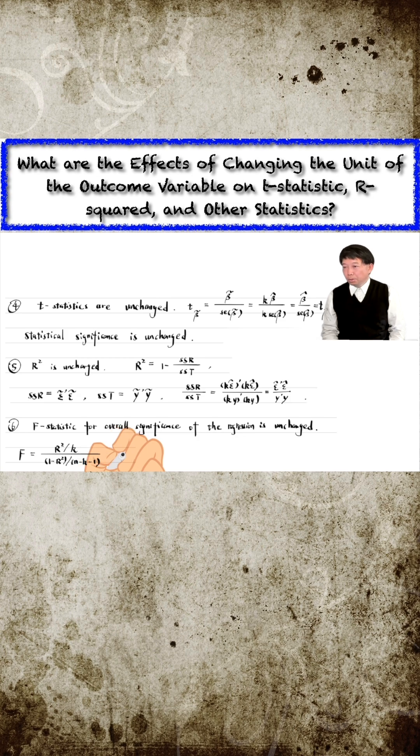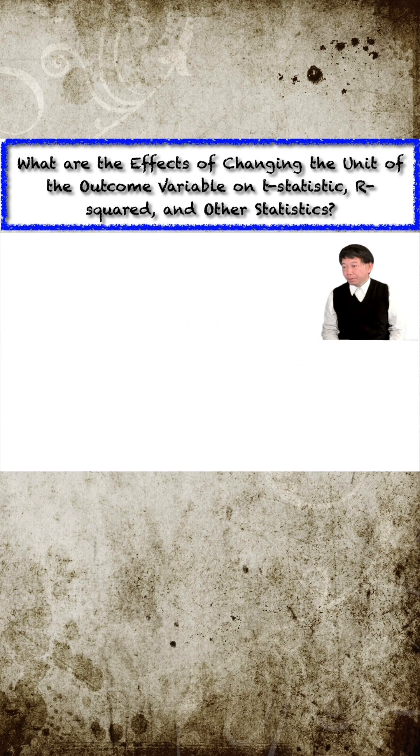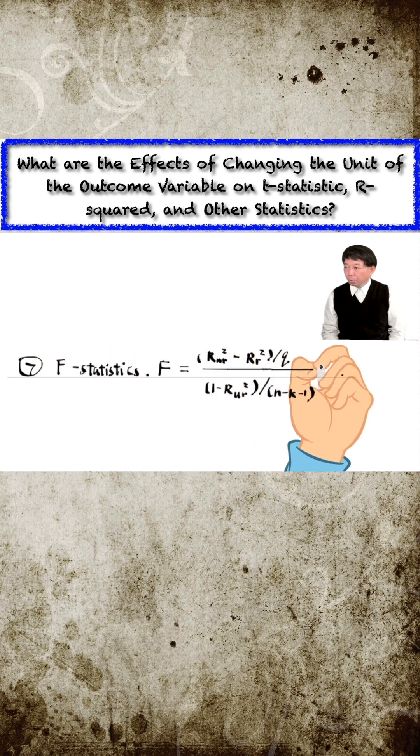The seventh conclusion concerns the f-statistics and the l-m statistics for testing multiple exclusion restrictions. Recall that the f-statistics can be computed using the r-squared form from the restricted and unrestricted models.